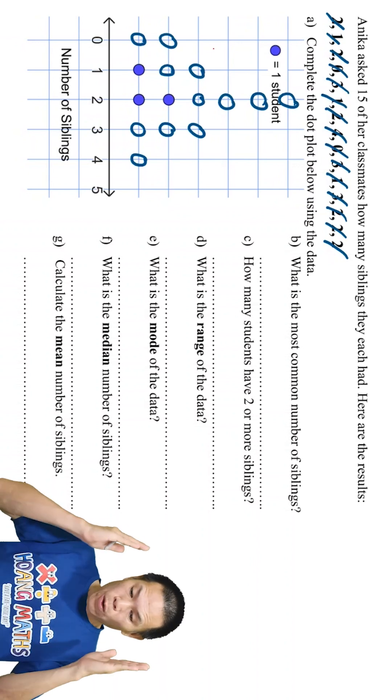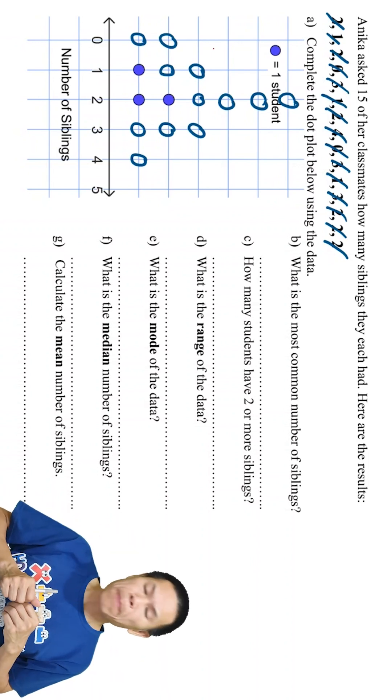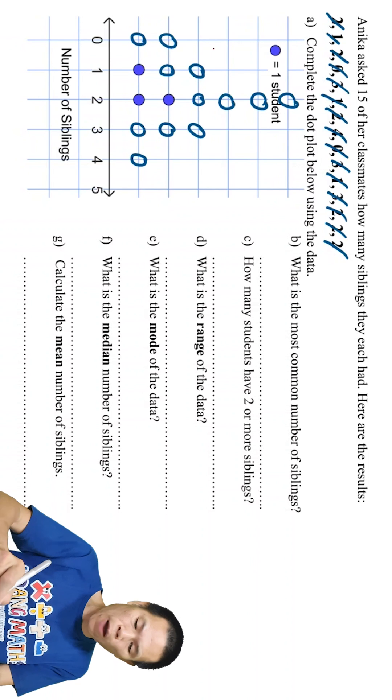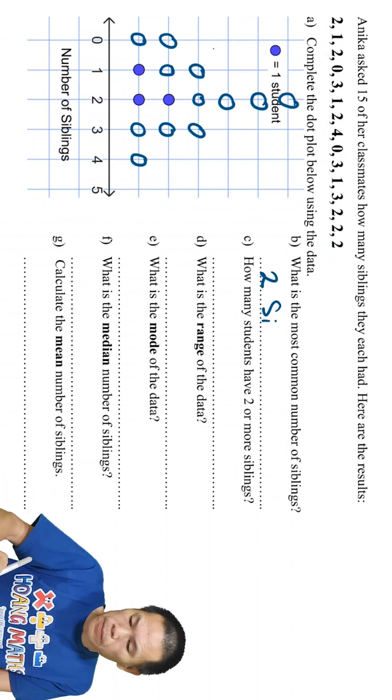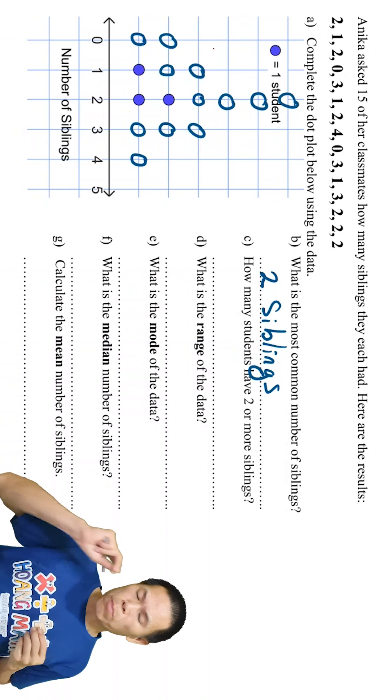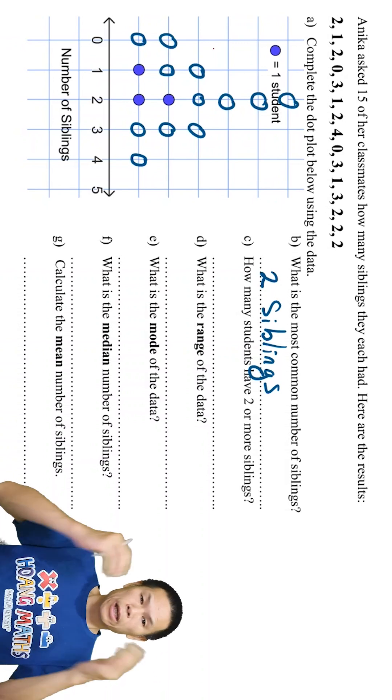Part B: what is the most common number of siblings? So you can see the most common number of siblings is 2. So there you go, the most common number of siblings is 2.